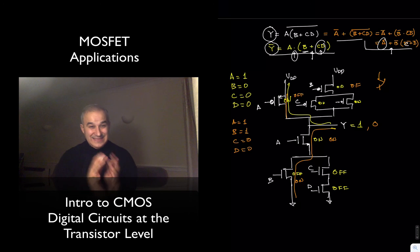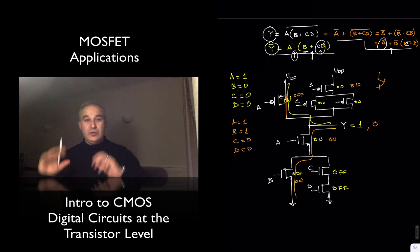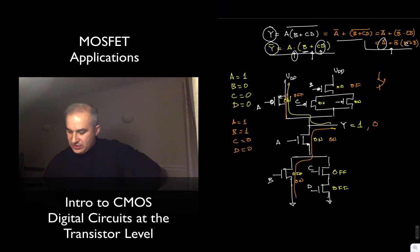Remember, in CMOS, we have complementary. And so this network at the bottom, the pull-down network, is complementary to the pull-up network. Only one is going to be conducting at a particular time.